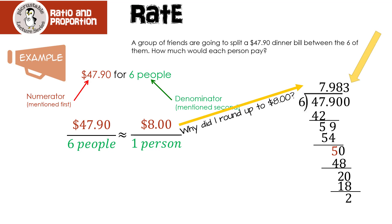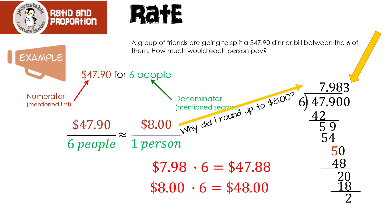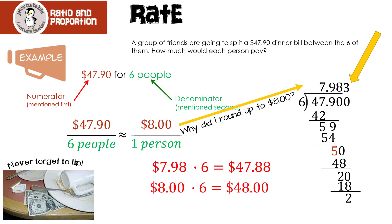What I did was look at $7.983 and round to the nearest dollar — so $8 per person. Why round up to $8? If I take $7.98 and multiply by six friends, we only get $47.88, which isn't enough to pay the $47.90 bill. But if I round up to $8, then 8 times 6 gives us $48 — definitely enough. And don't forget, you always need to tip, and what we just calculated does not include the tip.